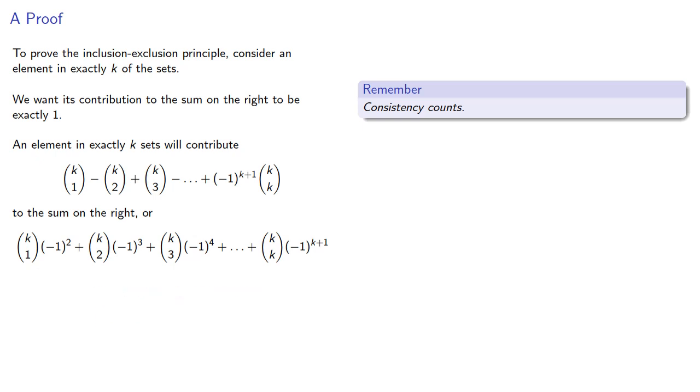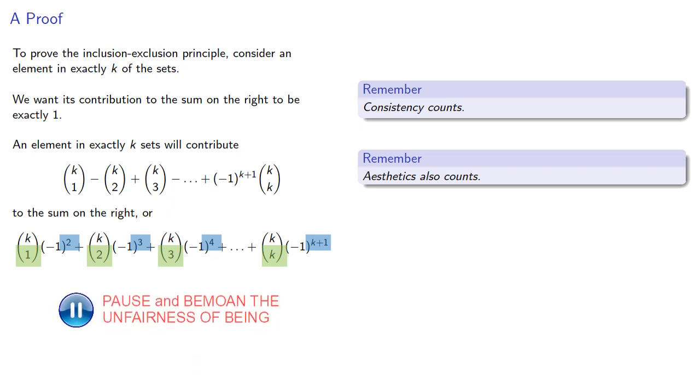The second useful idea in math and in life is that aesthetics also counts. Here it's a little bit ugly in that the exponent of the negative 1 is different from the term in the binomial coefficient. So let's factor out a negative 1.